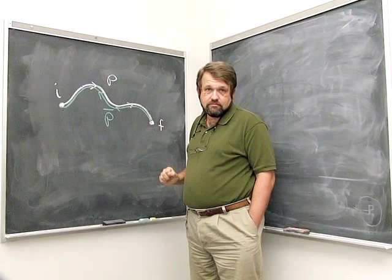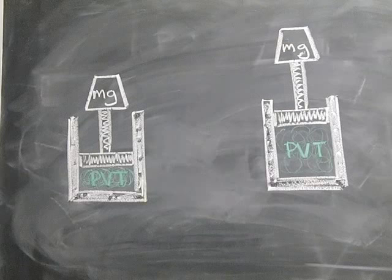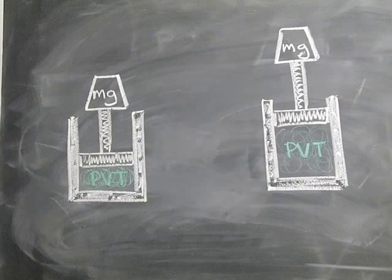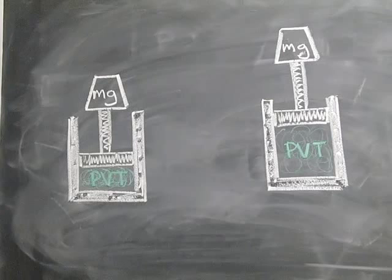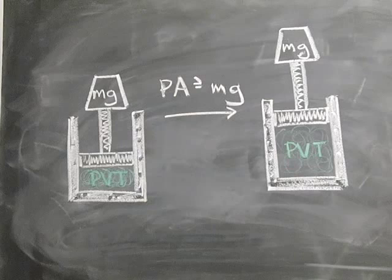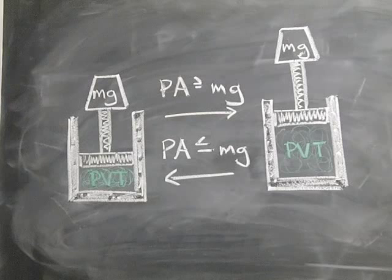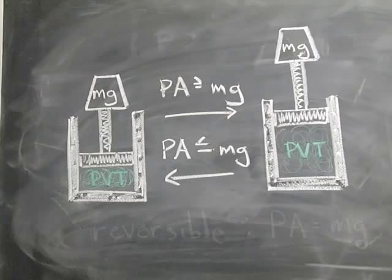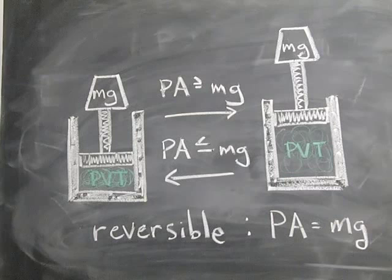What kind of processes are reversible? Could the expansion of a PVT system — a fluid — be reversible? Suppose the PVT system is put into a cylinder with a piston, oriented vertically, and when it expands it lifts a weight mg above the surface of the Earth. For the system to expand, the pressure force inside must be big enough to lift the weight: P times A must be at least as big as M times G. But if the process is to run in reverse, the weight must be big enough to compress the fluid, so P times A must be less than or equal to M times G. So if the process is to be reversible, the pressure force P times A must equal M times G.